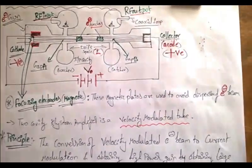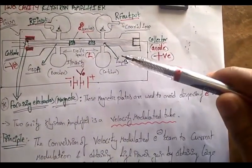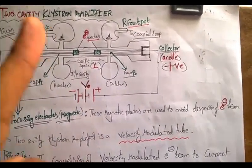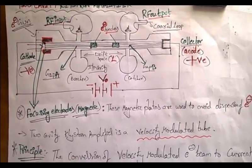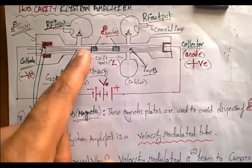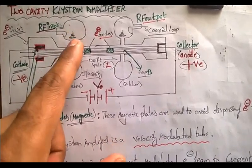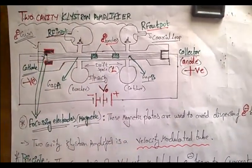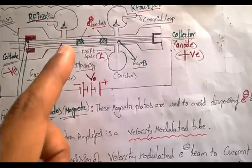The RF input is given to the first cavity, called the buncher cavity. The buncher cavity has two grids, and the catcher cavity is at the output side and also has two grids. When the RF — radio frequency — signal is given to the buncher cavity, it induces a voltage. The RF input is sinusoidal in nature, and this sinusoidal nature creates oscillations, inducing voltage in the cavity.